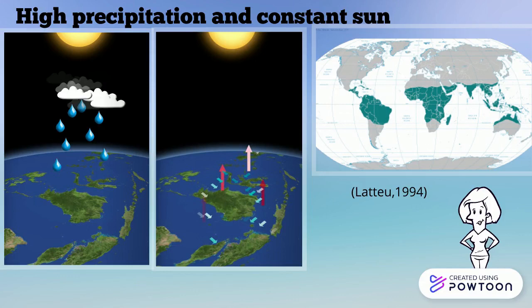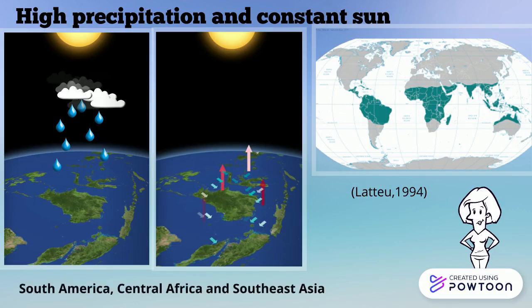Another important factor is intertropical convergence cells. These conditions shift in a longitudinal up and down direction. That is why tropical rainforests are located in the northern part of South America, in Central Africa, and in Southeast Asia.